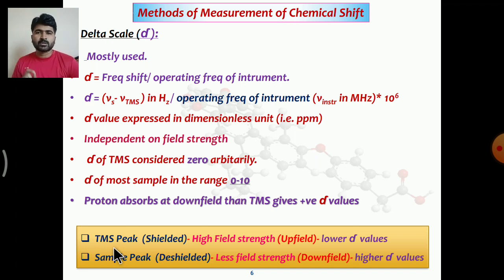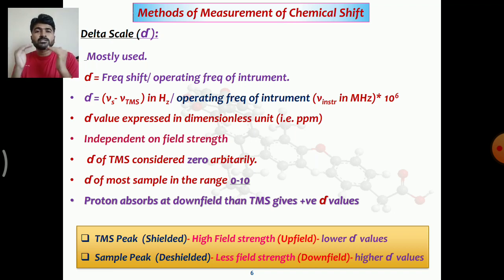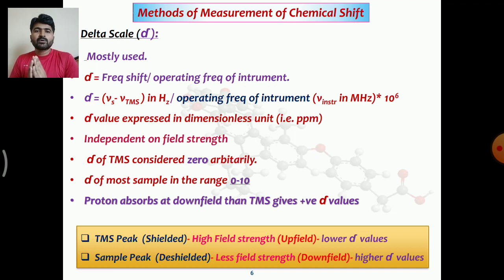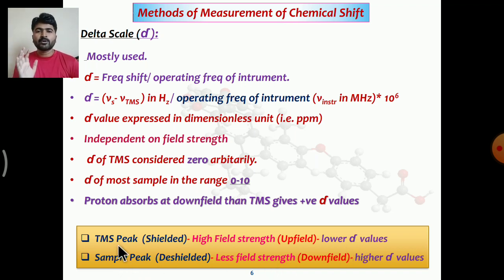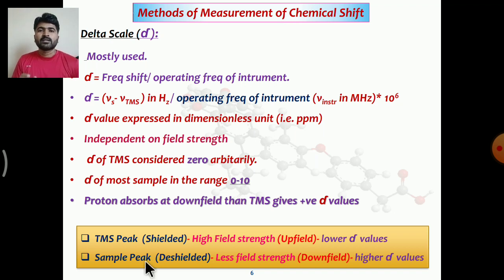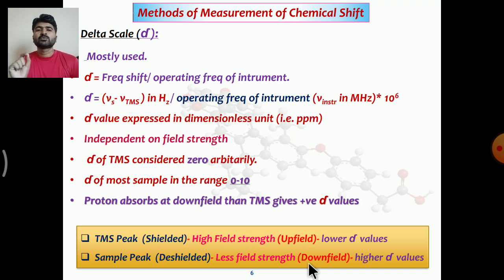The 12 protons in TMS are shielded, so to undergo resonance they require very high field strength, which is called upfield. Applying high field strength gives a lower delta value. In contrast, sample protons are deshielded compared to TMS, so they undergo resonance at less field strength — called downfield — and protons resonating at downfield give higher delta values.